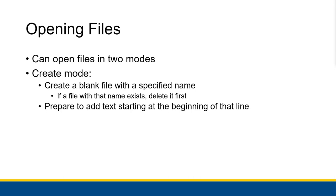The first mode is called create mode. You create a blank file with a specified name. If a file with that name already exists, you delete it first — you get rid of any pre-existing file in that location and create an empty one with nothing in it. Then it prepares to add text starting at the beginning of that first line in the file.